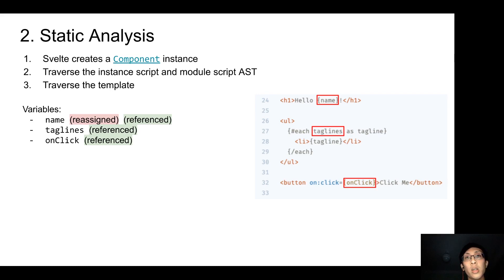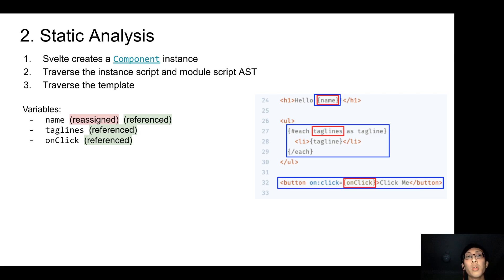And also, the element or logic block where the variables were found will keep the variable as dependencies. This indicates that whenever the variable changes in the runtime, the current element or logic block will need to be updated. Besides, during the template traversal, Svelte transforms the template AST into a fragment tree, where each of the fragment nodes records more meta information.